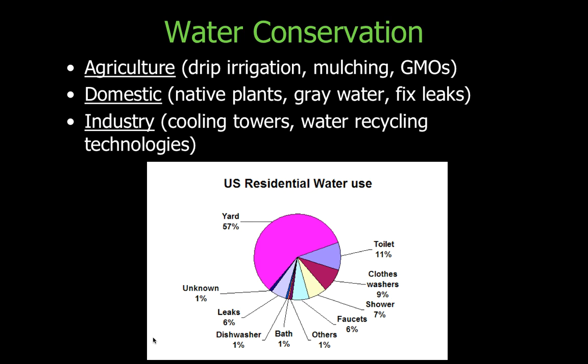Domestically, you can plant native plants that don't use as much water. You can have a gray water system — a catch system for rainwater or gray water directed from your house; for example, bath water is gray water that can be used to water your lawn. You can also fix leaks in your home, whether leaky faucets or a running toilet.